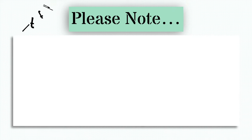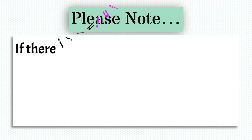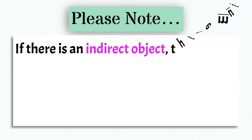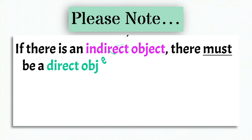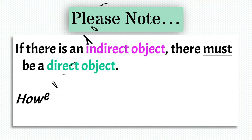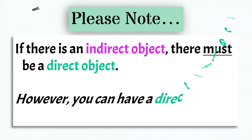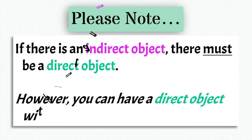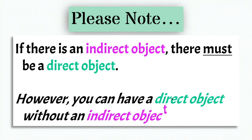Please note — here we have an important note. If there is an indirect object, there must be a direct object. However, you can have a direct object without an indirect object, just like the examples we already saw.